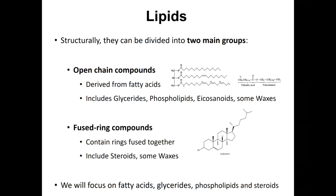Structurally, lipids can be divided into two groups. First, open chain compounds, which include glycerides, phospholipids, eicosanoids, and some waxes — these are basically derivatives of fatty acids. You can see some examples here on the top right: a triglyceride formed by three fatty acids combined with glycerol, and a type of wax formed by a fatty acid combined with an alcohol.